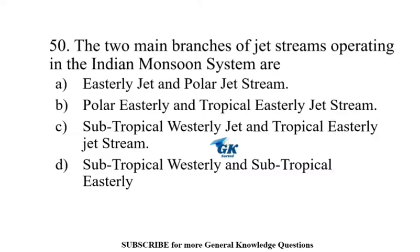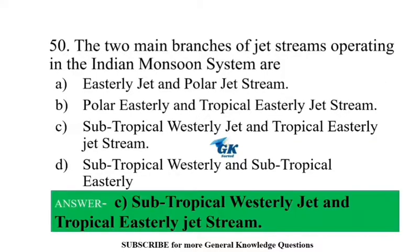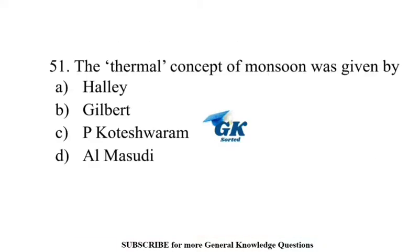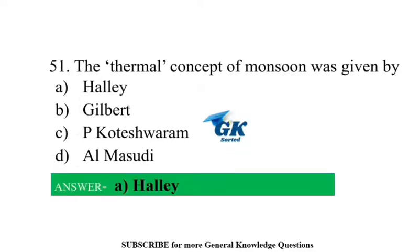The two main branches of jet streams operating in the Indian monsoon system are the subtropical westerly jet and the tropical easterly jet stream. The thermal concept of monsoon was given by Halley.